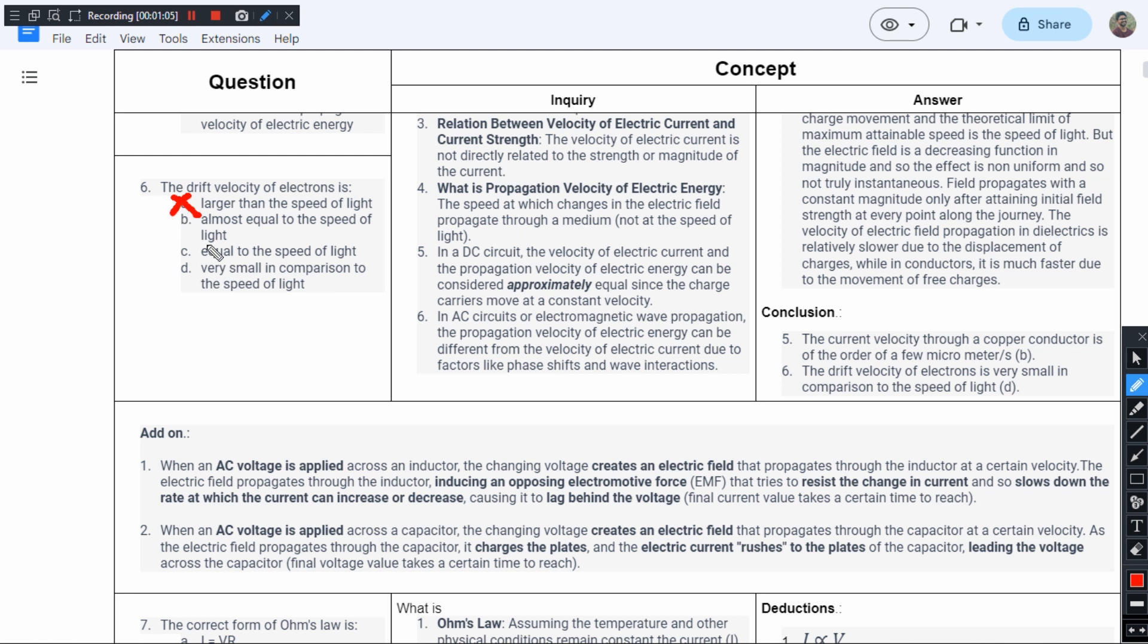Option B is almost equal to the speed of light. We are talking about drift. A drift can never be with the speed of light. So option B cannot be the answer and option C says equal to the speed of light. If you are ruling out option B, option C gets ruled out automatically.